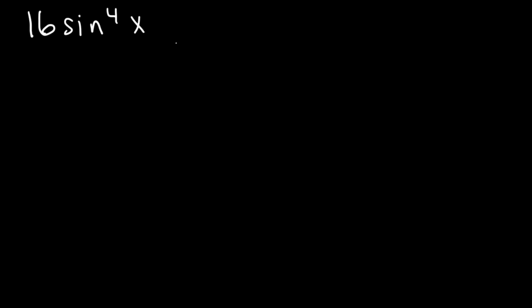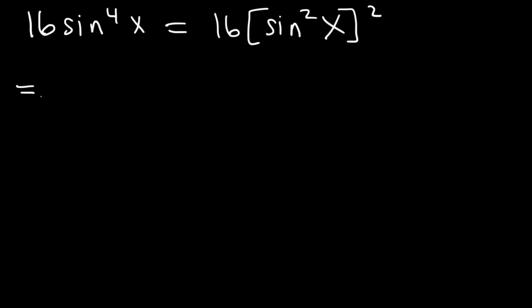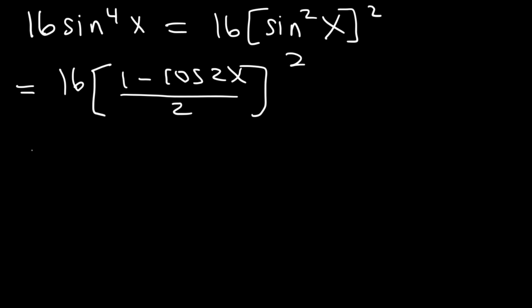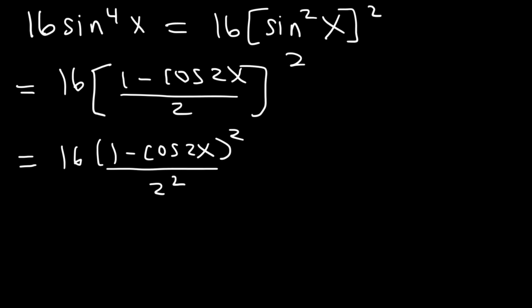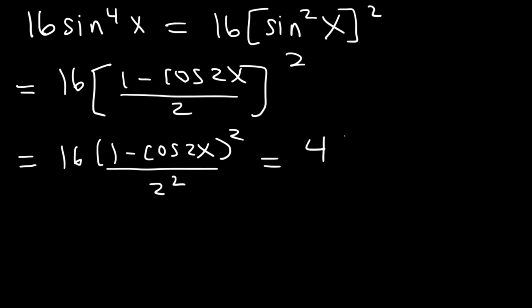Now let's use the power reducing formulas to reduce 16 sine to the 4th x. We rewrite sine to the 4th as (sine squared)². Applying the power reducing formula, this becomes 16 times [(1 minus cosine 2x)/2]². Rewriting, that's 16 times (1 minus cosine 2x)² over 2², and since 2² is 4 and 16 divided by 4 is 4, we have 4 times (1 minus cosine 2x)².